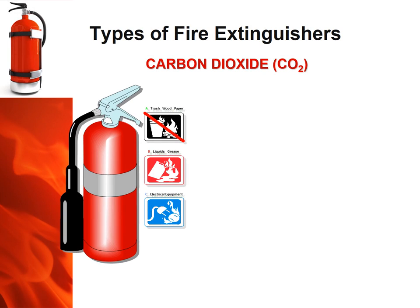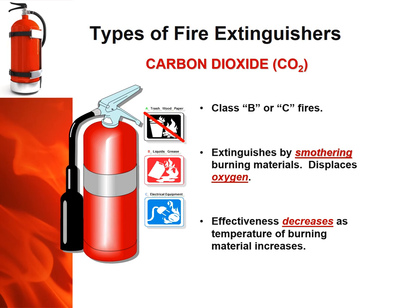The carbon dioxide fire extinguisher, which is sometimes filled with halon, is used around electrical components — we use them in our computer room. They have no pressure gauge; their capacity is verified by weight. These extinguishers extinguish fires by smothering the burning materials and displacing the oxygen, thereby killing the fire. Their maximum effective range is just 3 to 8 feet.